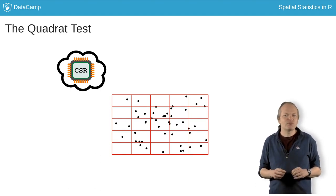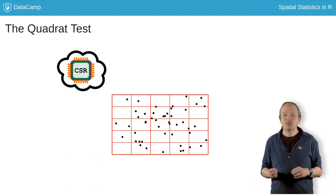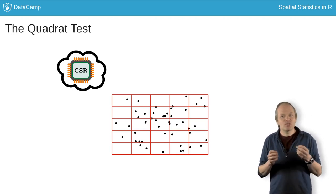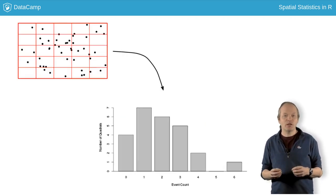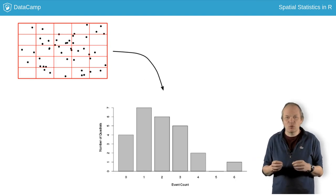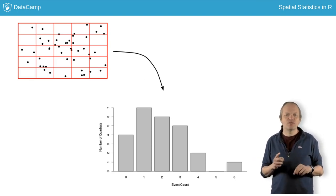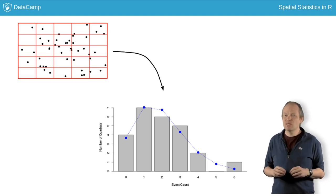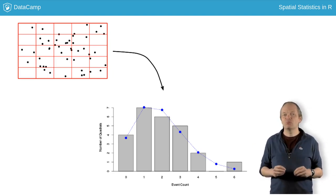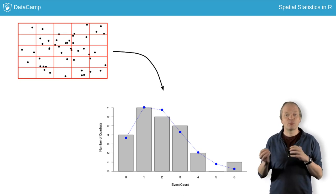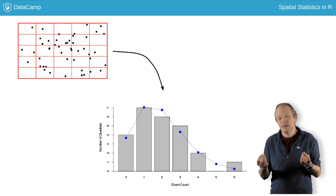Spatstat has a number of tests for complete spatial randomness, including the Quadrat test, which is where the window is divided into parts, typically 20 or so squares, and then the number of points in each square are counted. If the process is completely spatially random, then the number of points in the sub-regions come from a Poisson distribution, a simple distribution for count data.